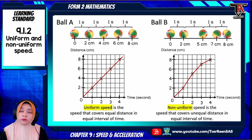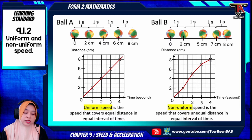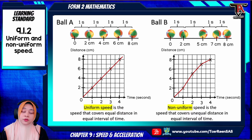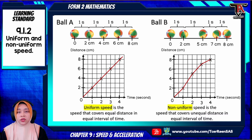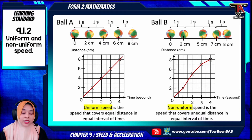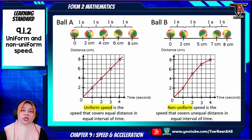What is actually uniform speed? Uniform speed is the speed that covers equal distance in equal interval of time, while non-uniform speed is the speed that covers unequal distance in equal interval of time. If you want to understand what is actually non-uniform and uniform speed, you just analyze the speed of each of the time intervals.